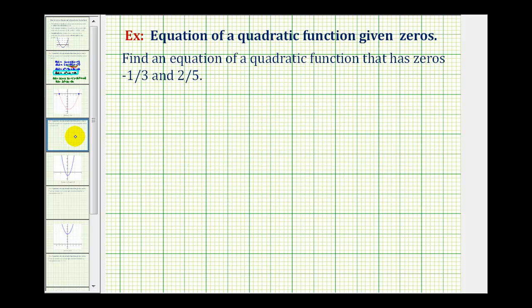So going back to our example, if the first zero is negative one-third, our function must contain a factor of x minus negative one-third. And if the second zero is two-fifths, the function must also contain a factor of x minus two-fifths.